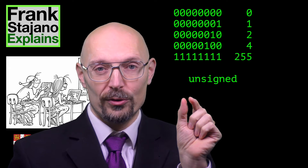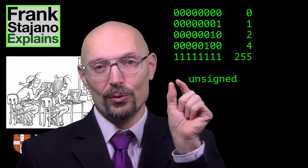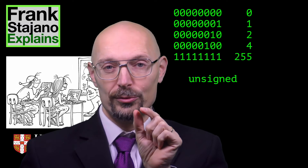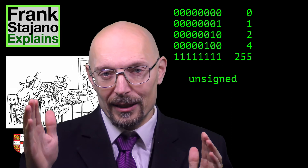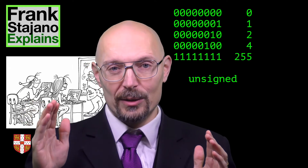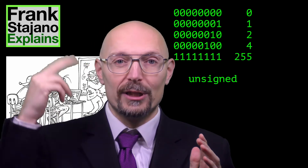When you want to represent numbers inside a computer, the first thing you do is think about natural numbers. The way to represent natural numbers is fairly obvious — it's the one you use to represent numbers in any base, except here the base is 2. In binary, the bit in the lowest position is worth 2 to the 0, the bit in position 1 is worth 2 to the 1, position 2 is worth 2 to the 2, and so on. So if you have k bits, numbered 0 to k minus 1, then the bit in position k minus 1 is worth 2 to the k minus 1.